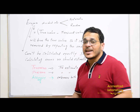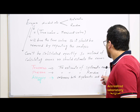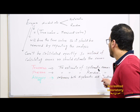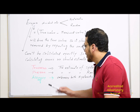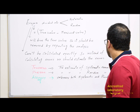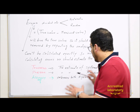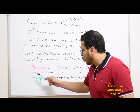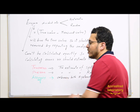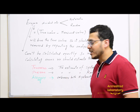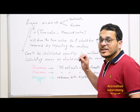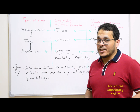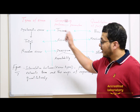Trueness is the estimate of systematic errors. Precision is the estimate of random errors. Accuracy encompasses both systematic and random errors — it includes both of them and is quantified by assessing both, which represents the total error.